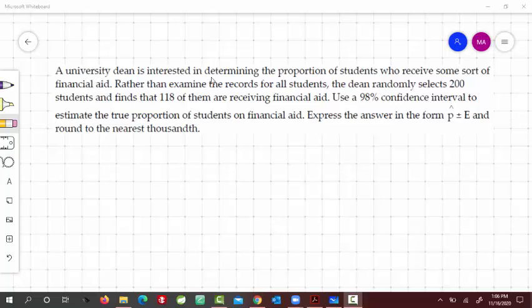A university dean is interested in determining the proportion of students who receive some sort of financial aid. Rather than examine the records for all students, the dean randomly selects 200 students and finds that 118 of them are receiving financial aid. Use a 98% confidence interval to estimate the true proportion of students on financial aid. Express your answer in the form p hat plus minus e,